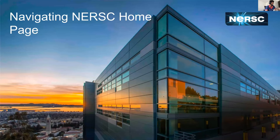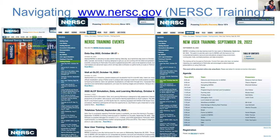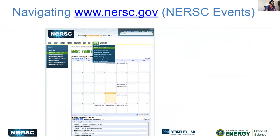Now we'll talk about how you navigate the NERSC homepage at nersc.gov. On the left-hand side is the main page. If you want to look at events under NERSC Training, you'll see a lot of events and can click on any of them, like the NERSC User Training, to see an agenda and all relevant training materials. There's also the events calendar where you can see an overview of all events, and clicking on one will show you the Zoom link.